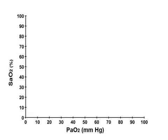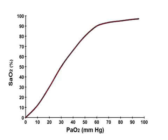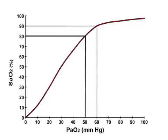The hemoglobin-oxygen dissociation curve shows the relation between PaO2 and SaO2. The affinity of hemoglobin for oxygen varies at different partial pressures of oxygen, and although the relation is not linear, increases in PaO2 lead to higher SaO2. In general, 80% saturation corresponds to a PaO2 of 50 mmHg, and 90% saturation corresponds to a PaO2 of 60 mmHg.